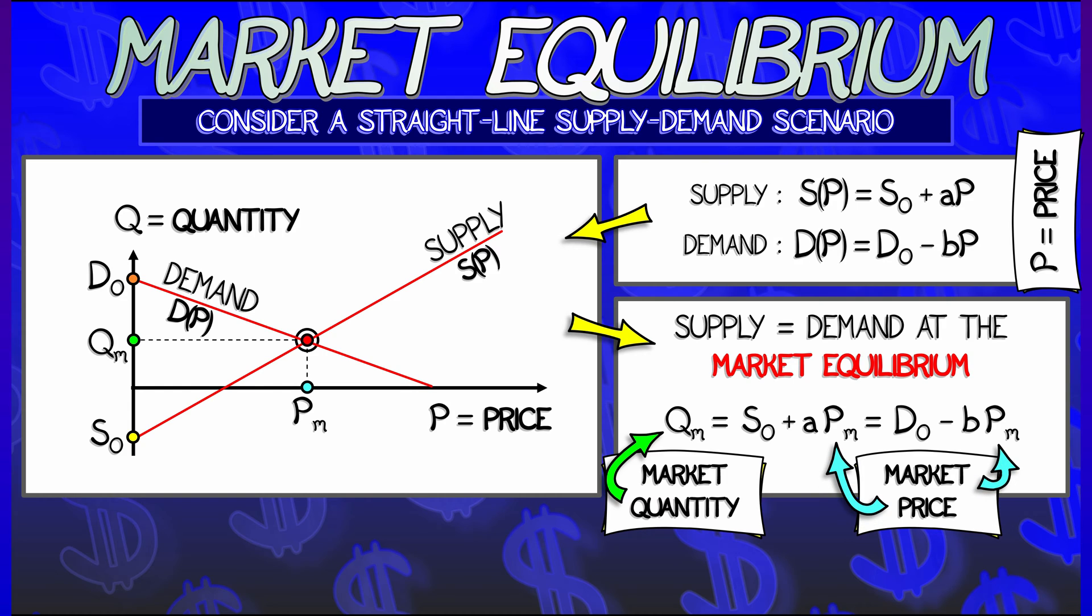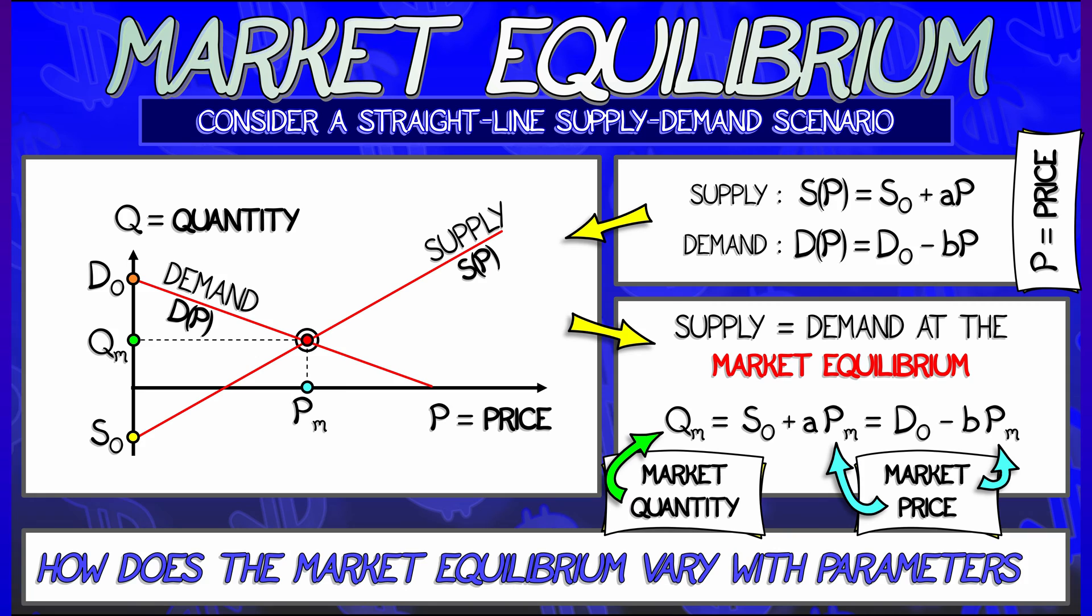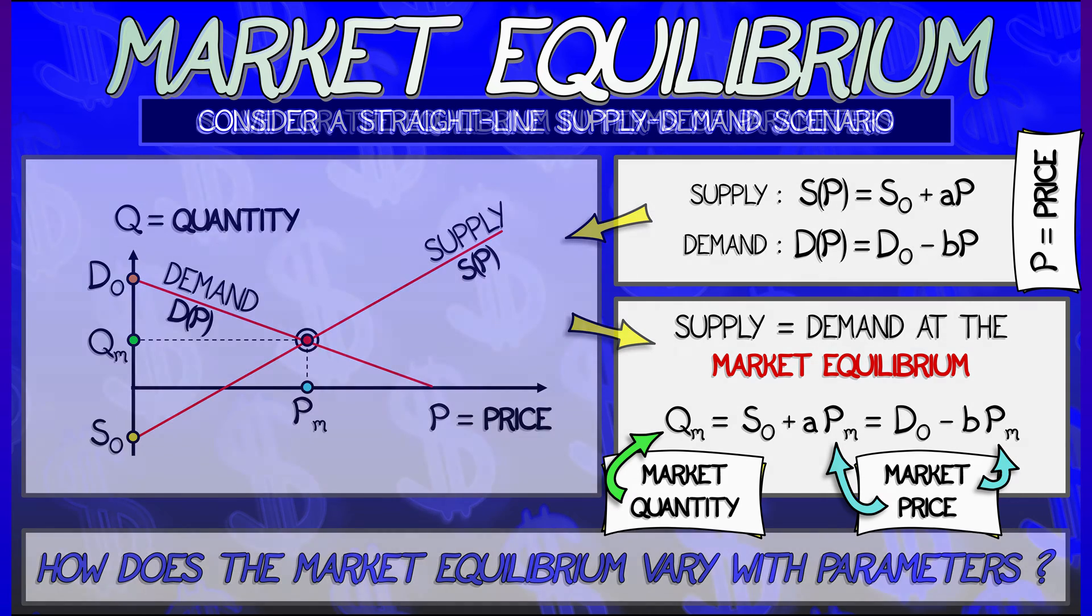Now, what you might be interested in is how do these market prices, market quantities, vary with a change in the model? If I change those constants that went into the supply and demand curves, how would we figure that out?